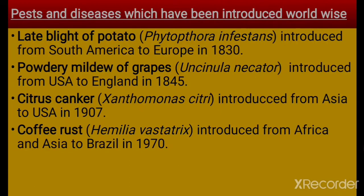Now we will see pests and diseases which have been introduced worldwide. First, late blight of potato, which is caused by Phytophthora infestans, was introduced from South America to Europe in 1830. Then powdery mildew of grapes, caused by Uncinula necator, was introduced from USA to England in 1845.